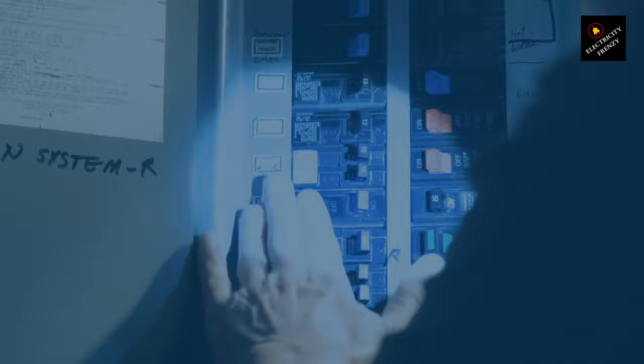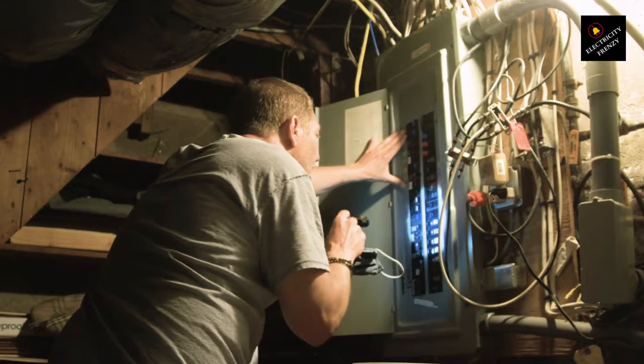Diagnosis: An electrician should assess the voltage levels in the electrical system to identify if low voltage or voltage drop is occurring. This may involve voltage measurements at various points in the circuit during dishwasher operation.